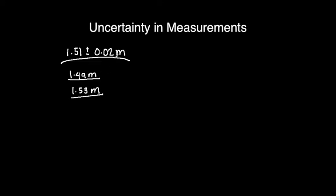The maximum and minimum provides upper and lower bounds to the true value. The shorthand notation is reported as 1.51, parentheses, and then your uncertainty, and then the unit. So this is the shortcut of this notation. You can also write 1.51 plus minus 0.02. Instead of writing it in this long manner, you can just write 1.51, enclose your uncertainty in parentheses, and then write your units. The number enclosed in parentheses indicates the uncertainty in the final digit of the number.